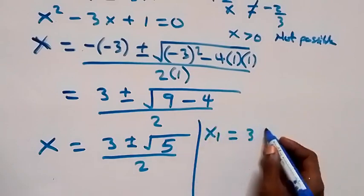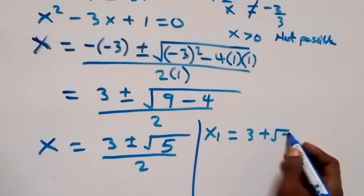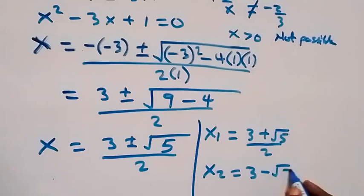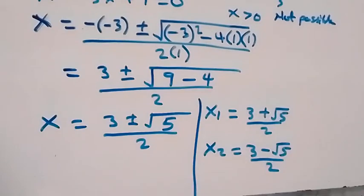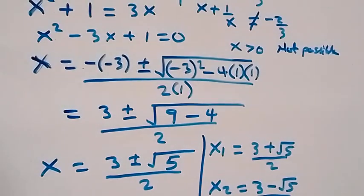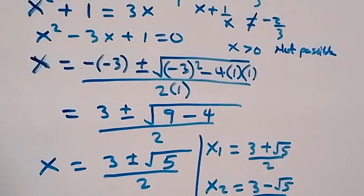So we have two values of x: x₁ equals 3 plus root 5 over 2, and x₂ equals 3 minus root 5 over 2. That brings us to the end of this class. Thank you for watching — don't forget to subscribe for more exciting videos, give a thumbs up, and leave your comment. See you next class, bye for now.